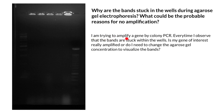Here is the description of the problem: I'm trying to amplify a gene by colony PCR, and every time I observe that the bands are stuck within the wells. Is my gene of interest really amplified, or do I need to change the agarose gel concentration to visualize the bands? You can see the problem here — the ladder is very faint and barely visible, and the rest of the DNA is basically stuck in the wells and doesn't move through the gel, whereas the ladder did move through.